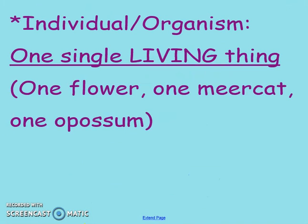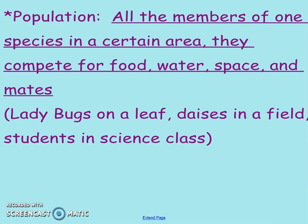An individual organism is just one single living thing — one flower, one meerkat. The next level is a population. This is where you add in all members of one species in a certain area, and they're actually going to be competing for things like food, water, and space. For example, ladybugs on a leaf.